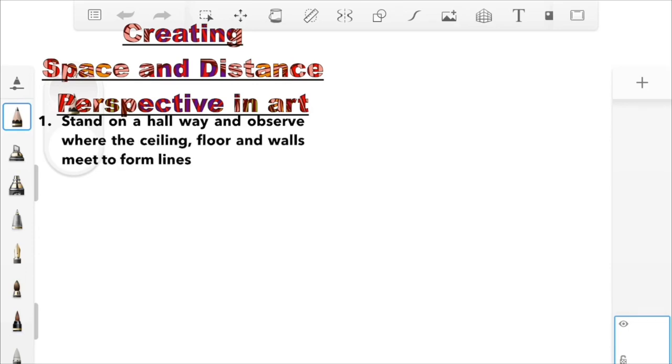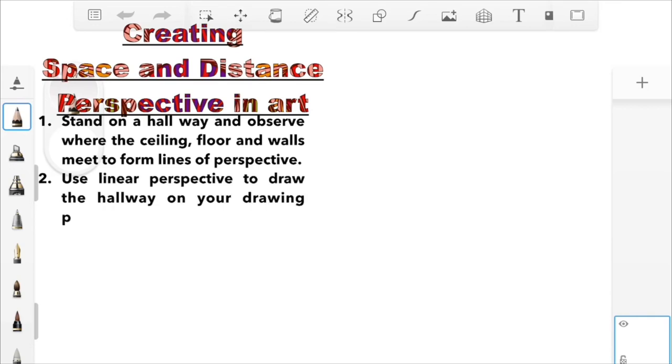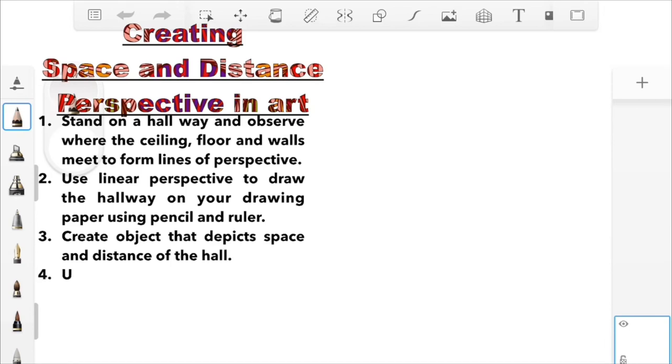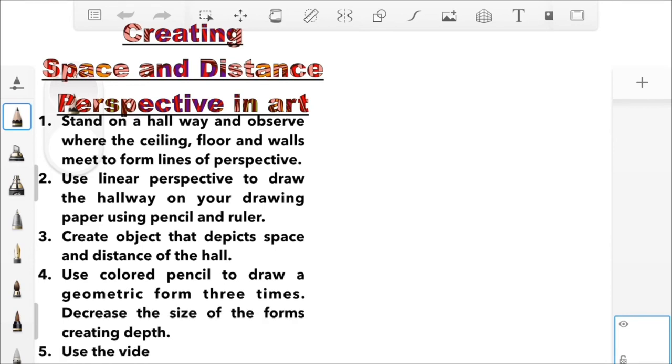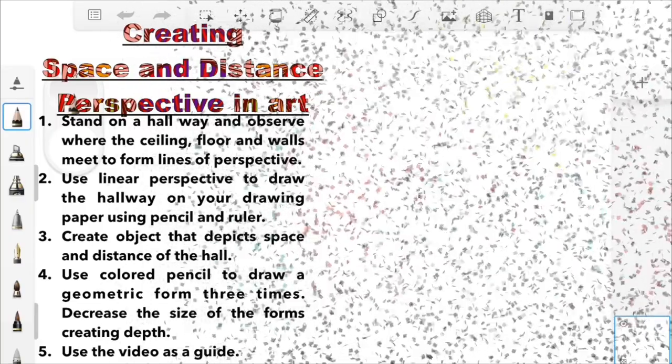Instructions: Stand in a hallway and observe where the ceiling, floor, and walls meet to form lines of perspective. Use linear perspective to draw the hallway on your drawing paper using pencil. Create objects that depict space and distance of the hall. Use colored pencil to draw a geometric form three times. Decrease the size of the forms to create depth. Use the video as your guide.